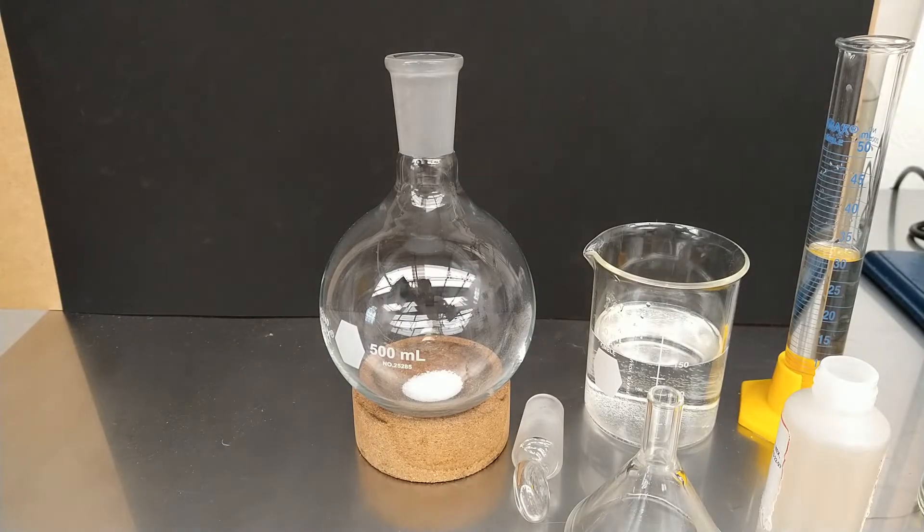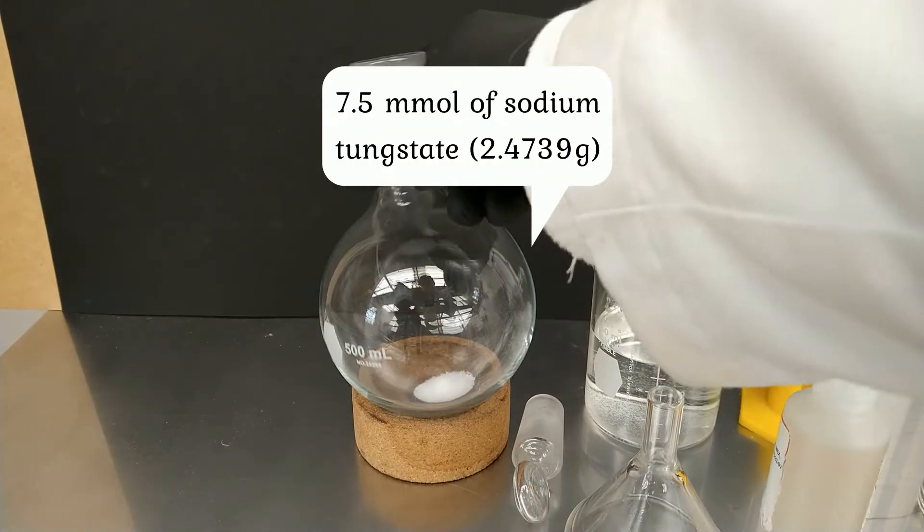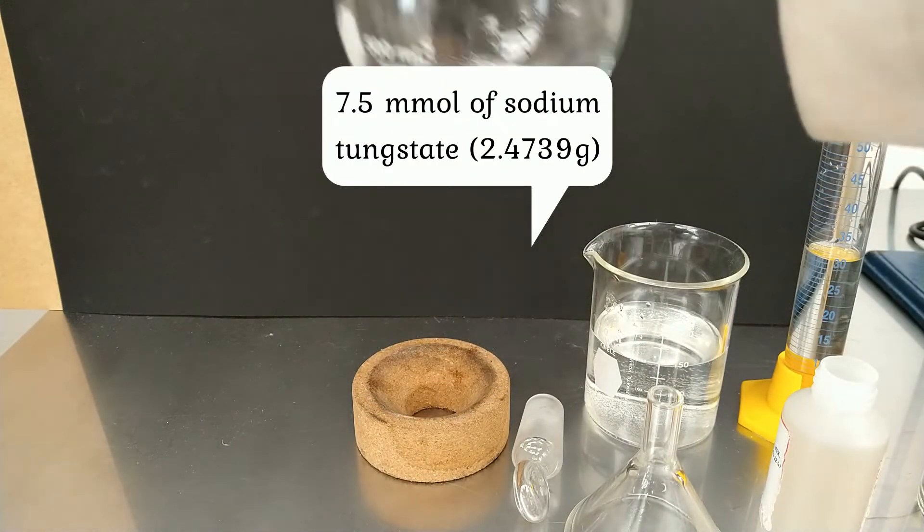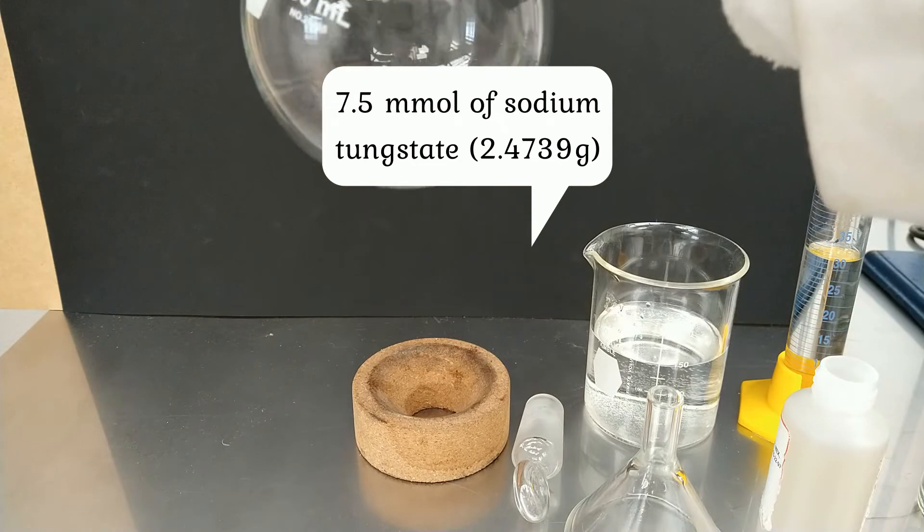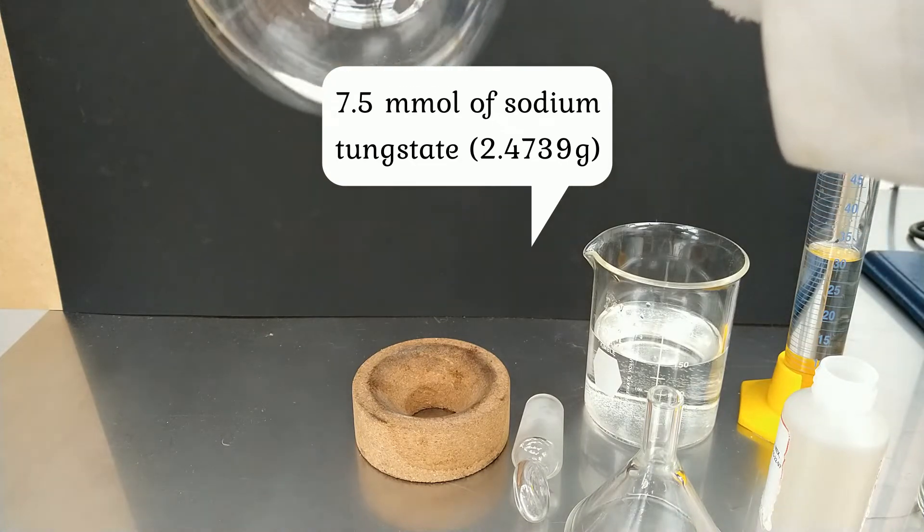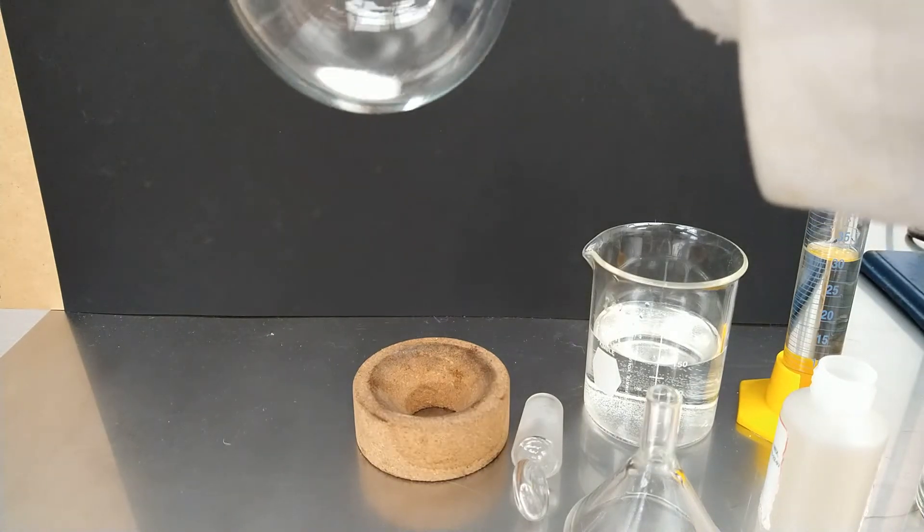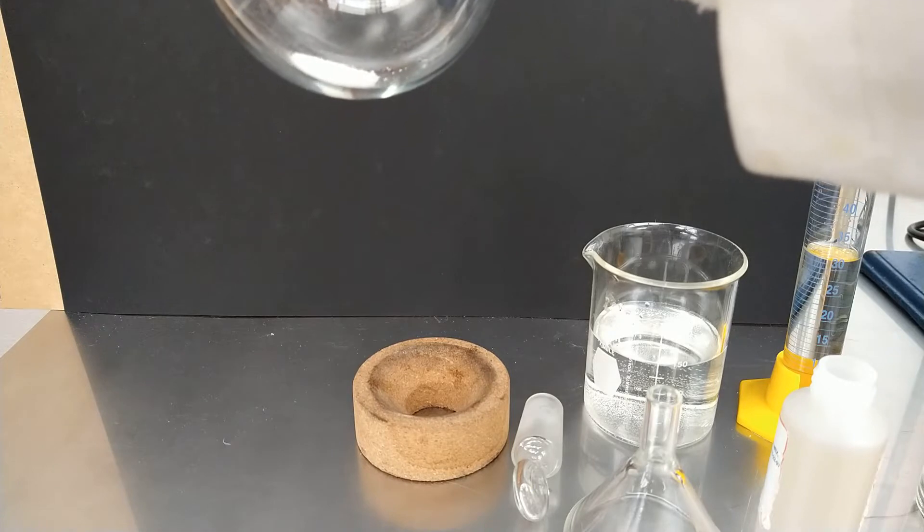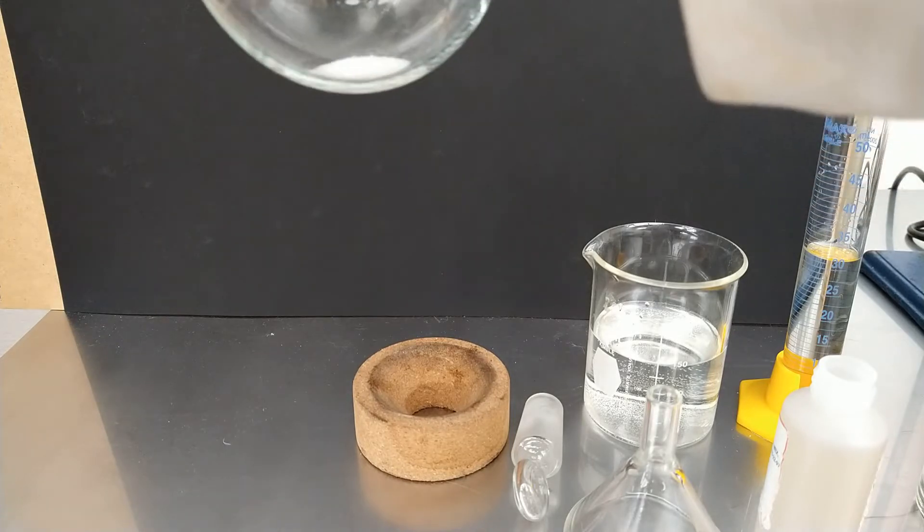To begin with the reaction, we have in this flask already measured 7.5 mmol of sodium tungstate dihydrate, that is equal to 2.47 g of sodium tungstate.